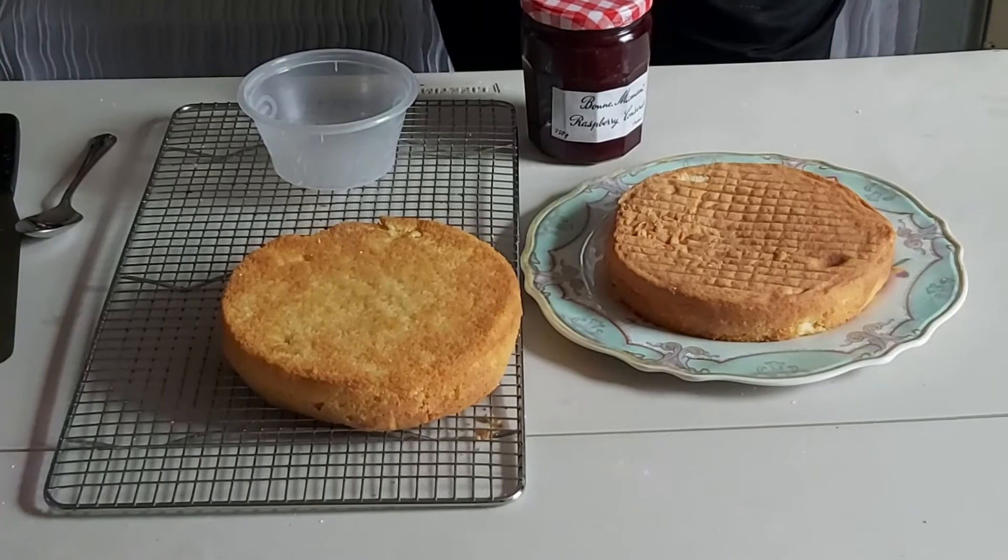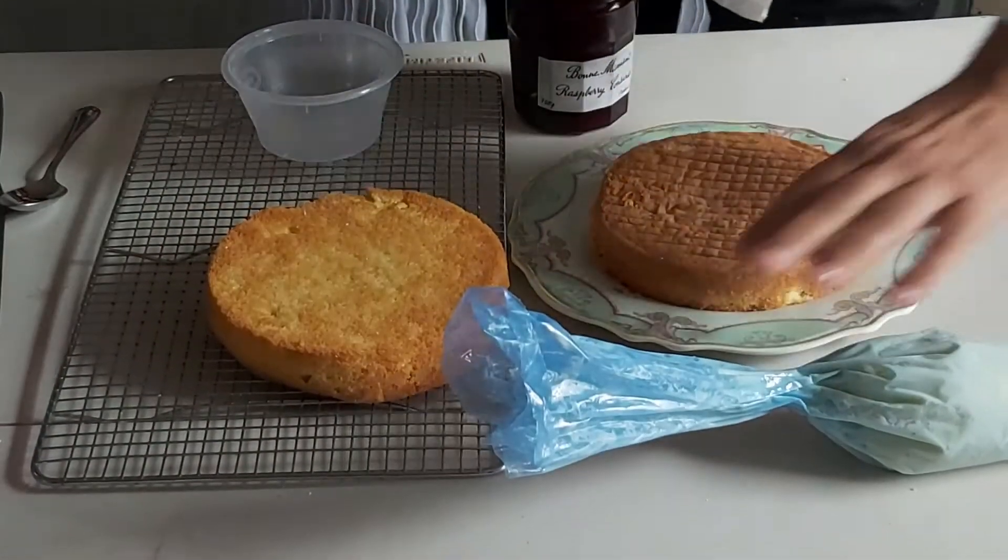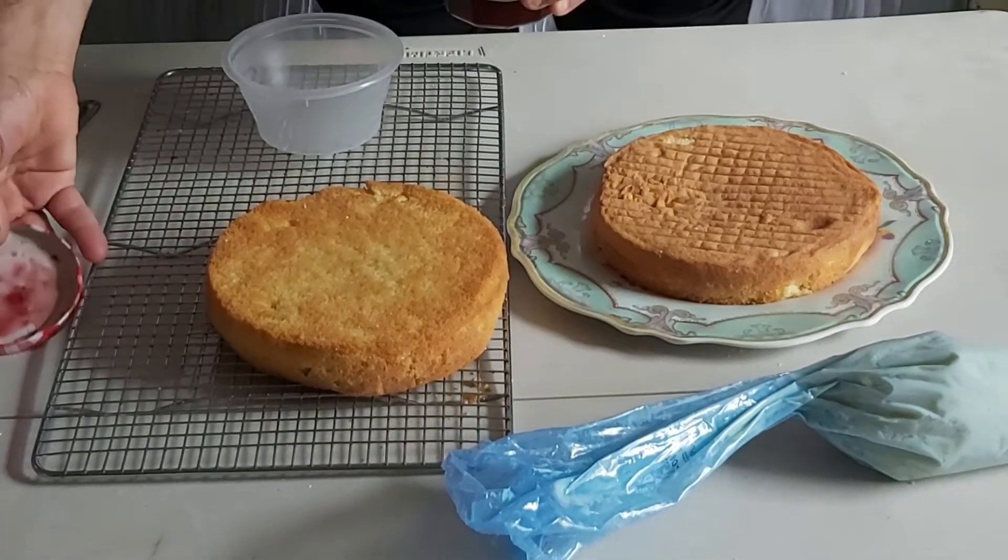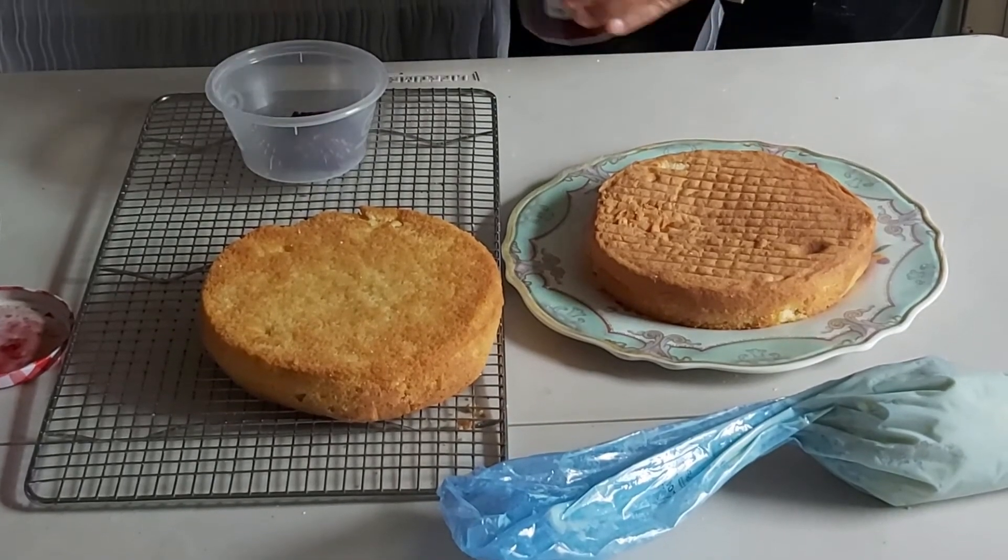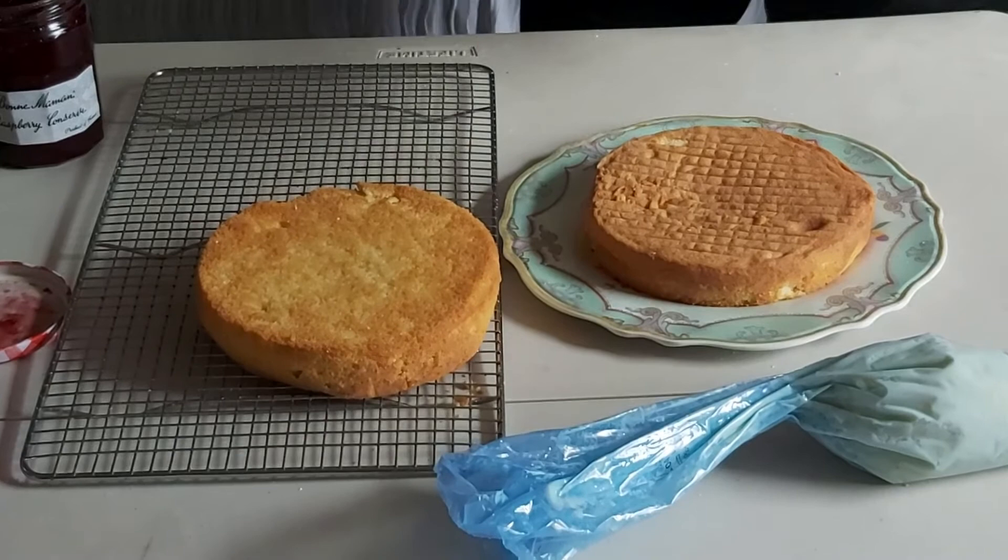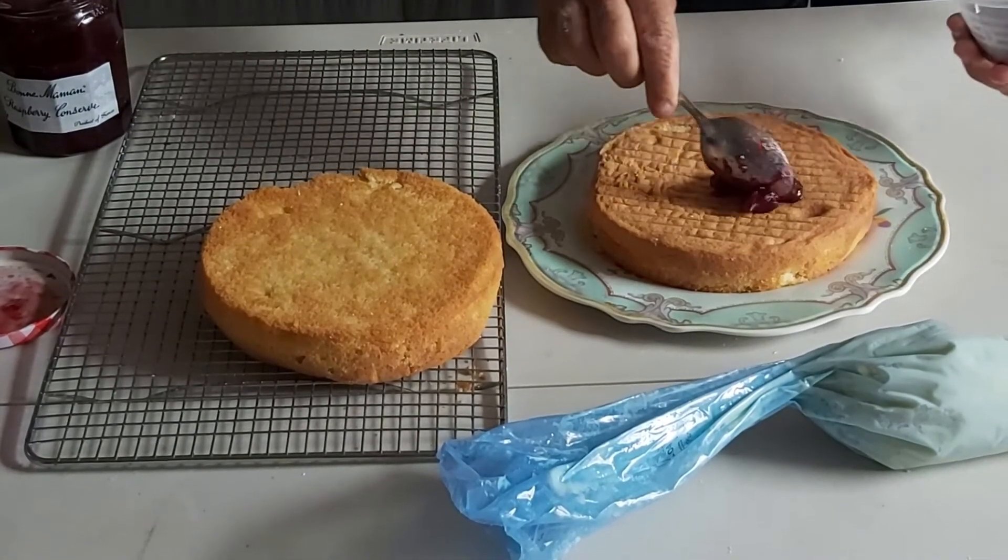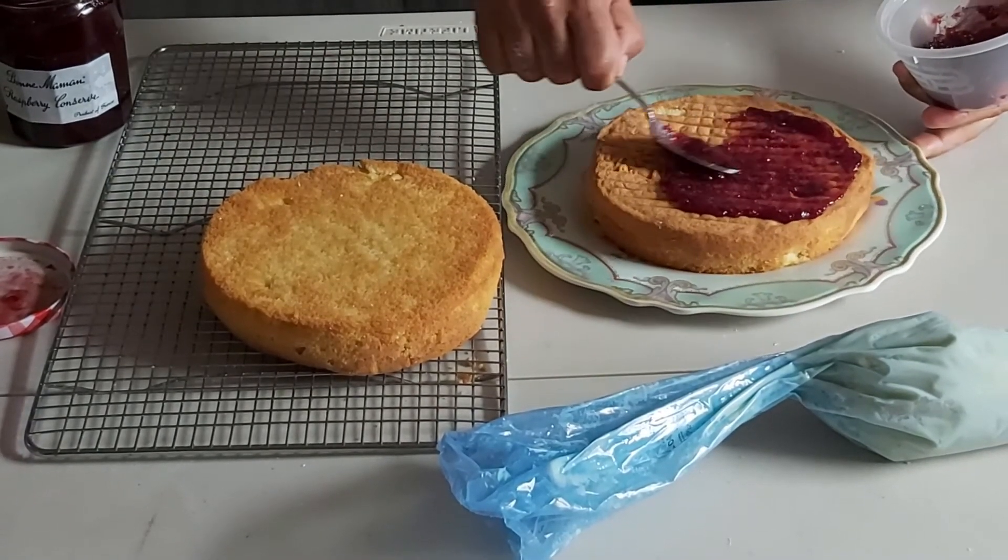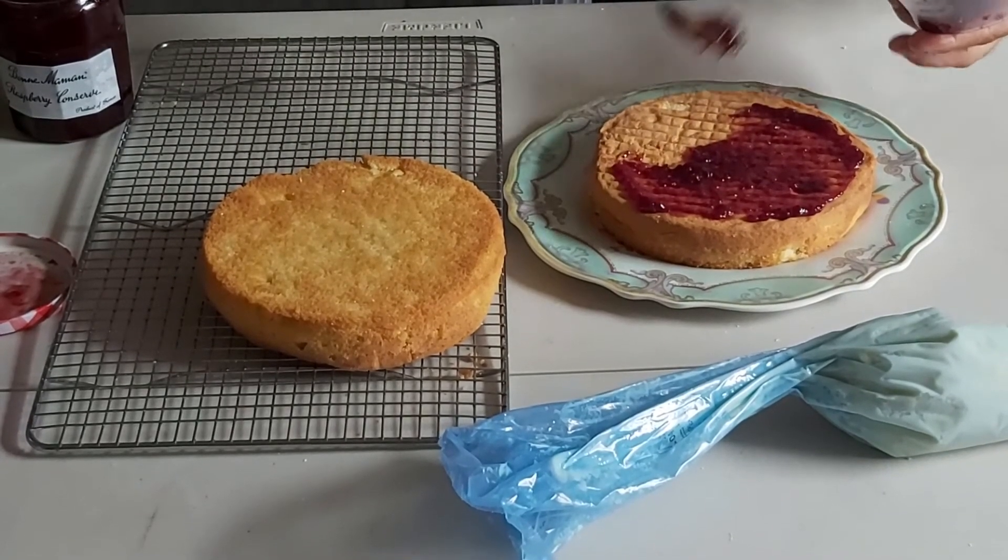Okay so once the icing is made up put it into a piping bag and then for the next stage we're going to get some jam. Just going to take some out of the jar first. I'm going to spread that onto the sponge at the top. So this is raspberry but you can use any flavor jam, strawberry.